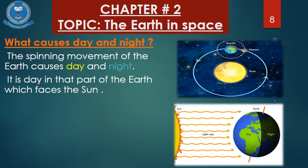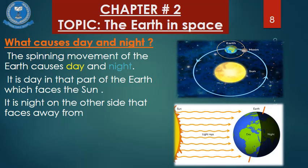It is day in that part of the Earth which faces the sun. Planet Earth ka woh part jo sun ko face kar raha hoga wahan pe hoga din, aur woh part jo sun se door hoga wahan pe hogi raat. Aap isko diagram mein dekh sakte ho: sun ki light rays pad rahi hain — jahan Earth sun ko face kar rahi hai wahan din hai, aur doosri taraf raat hai.